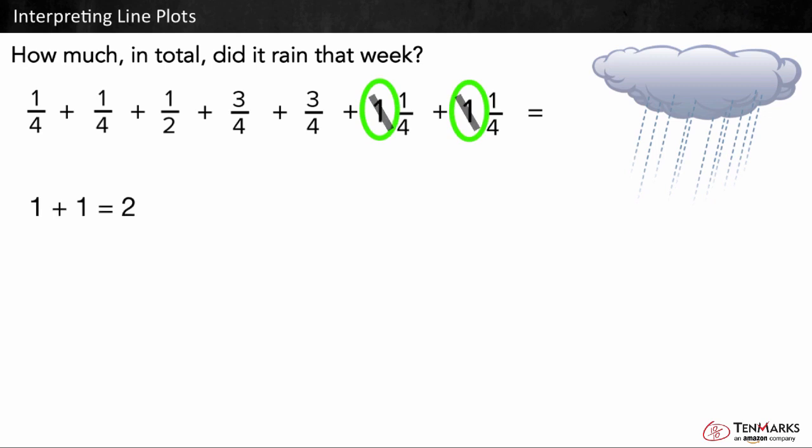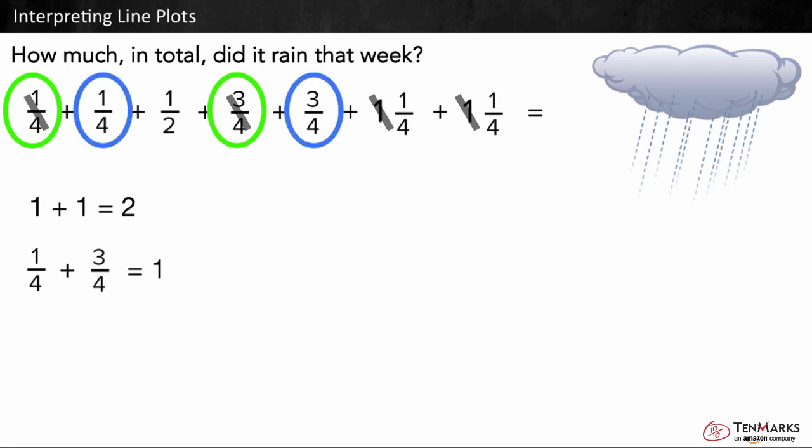Let's look for ways to make wholes. I know that one-fourth plus three-fourths equals four-fourths, which is one whole. I can do the same with these addends. One-fourth plus three-fourths is equal to one whole. So, this set of one-fourth and three-fourths makes one whole, and another set of one-fourth and three-fourths makes another whole.